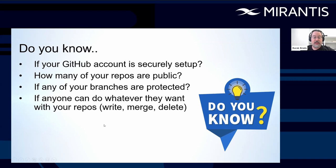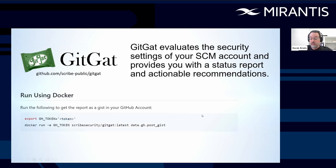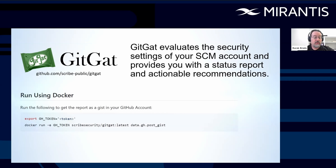That's one of the reasons that Scribe decided to build GitGat. GitGat evaluates the security settings of your SCM — source control management system — account, and provides you with status reports and actionable recommendations. It's really easy to start using, even if you don't have that much programming experience. First, you need to get yourself a GitHub token — it's really easy to do, GitHub is very helpful with that. Then you can run it using a simple Docker run command, just like it shows here on the screen.